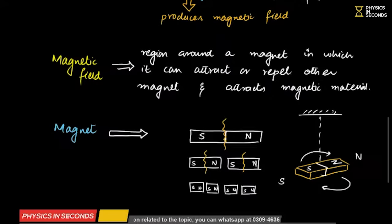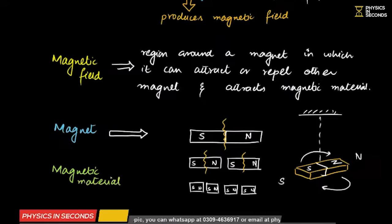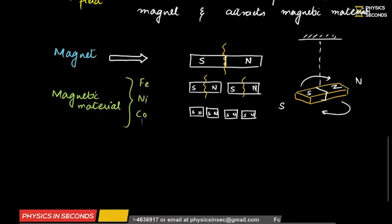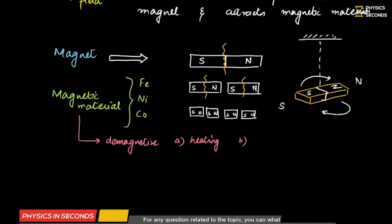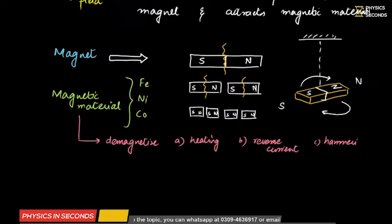Magnetic materials are those materials which are attracted or repelled by a magnet. Examples include iron, nickel, cobalt, and alloys like Alnico. If you want to demagnetize a magnetic material, there are three methods: number one — heat it (as you study Curie temperature in chapter 17, where a ferromagnetic material converts to paramagnetic); number two — reverse current; number three — hammering, which disturbs the domain of the material and demagnetizes it.